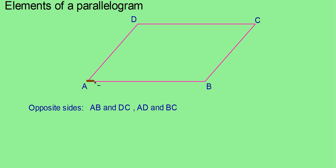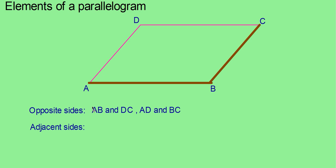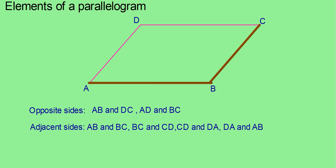Now consider the side AB. It starts from A and ends at B. From B another side BC starts. These two sides AB and BC we can call adjacent sides. There are 4 pairs of adjacent sides: AB and BC, BC and CD, CD and DA, and DA and AB.